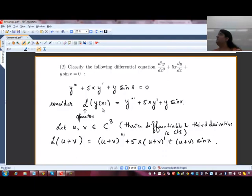Now I have to simplify this expression. (u + v)''' is what? Very good: u''' + v''', and 5x times (u' + v'), and then the last term we have here u sin x + v sin x. So we get this expression.